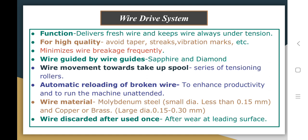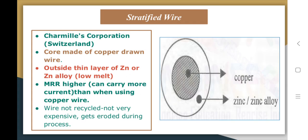One major advance in Wire EDM is the stratified wire. The properties of the wire used in this process have an impact on material removal rate and quality of the cut surface. Stratified wires are now used as electrodes. These wires are made of a copper core with a thin layer of zinc over it. Such a wire can carry more current, hence achieving a higher material removal rate.